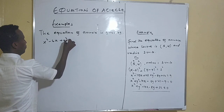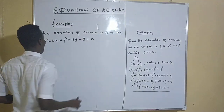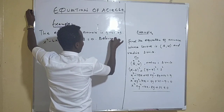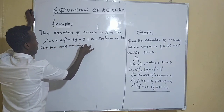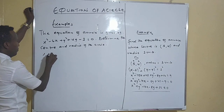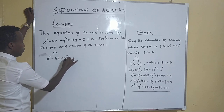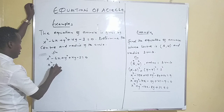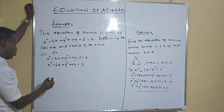Determine the center and the radius of the circle. Coming to the solution: we have the equation x squared minus six x plus y squared plus four y minus three equals zero. We take the constant to the other side, so x squared minus six x plus y squared plus four y equals positive three.